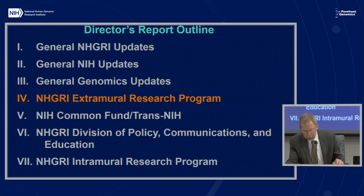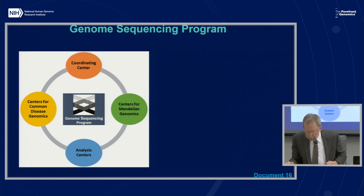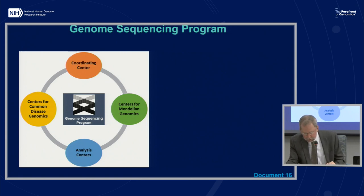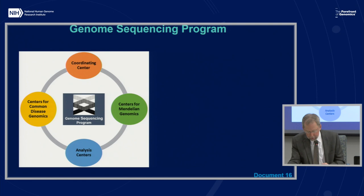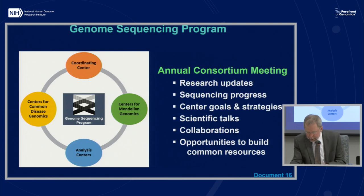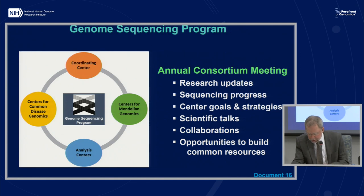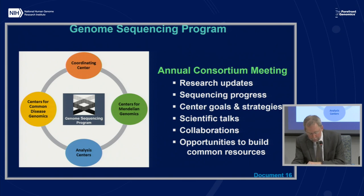Moving on to the extramural research program, starting with the genome sequencing program. The program is composed of a coordinating center, three analysis centers, four centers for common disease genomics, and four centers for Mendelian genomics. It is supported by the National Heart, Lung, and Blood Institute, the National Institute of Aging, the National Eye Institute, and also the Simons Foundation. The program recently held its annual consortium meeting where the centers discussed research updates, sequencing progress, and goals and strategies documents. Meeting highlights included scientific talks from outside researchers, updates from collaborations with the Knockout Mouse Project, Transomics for Precision Medicine or TopMed, and the Undiagnosed Diseases Network.